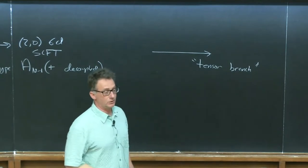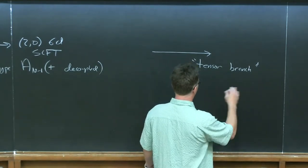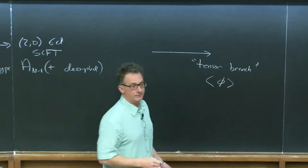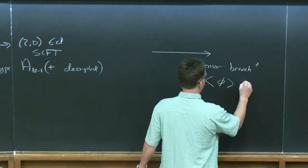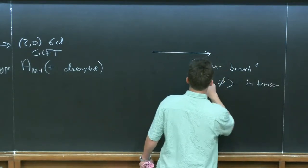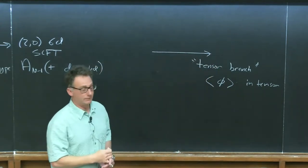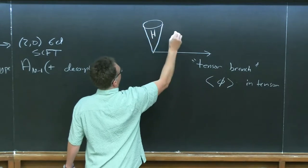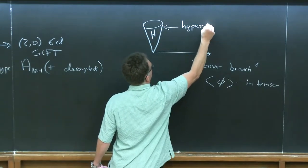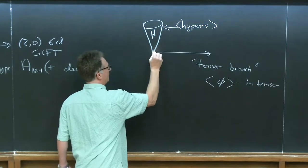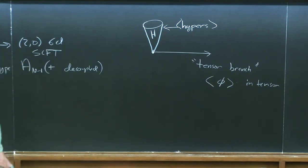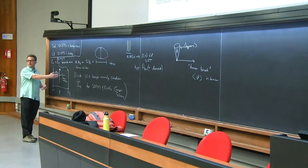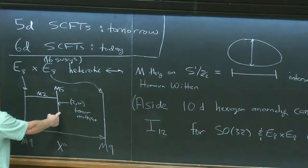There's a tensor branch, which is the six-dimensional analog of a Coulomb branch. In five and lower dimensions the Coulomb branch is where a scalar in a vector multiplet gets an expectation value; here it's the scalar in the tensor multiplet that gets an expectation value. There could also be a Higgs branch where some hypermultiplets have expectation values. Something interesting can happen at the origin of the moduli space — this is like a vacuum manifold for these theories, and the branes are mutually BPS so they can freely move.